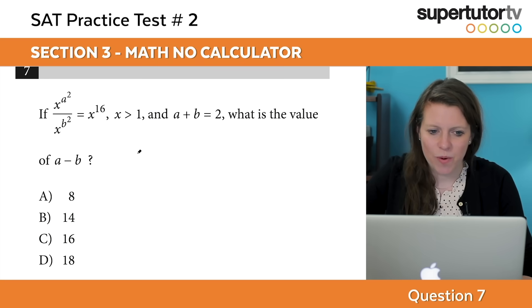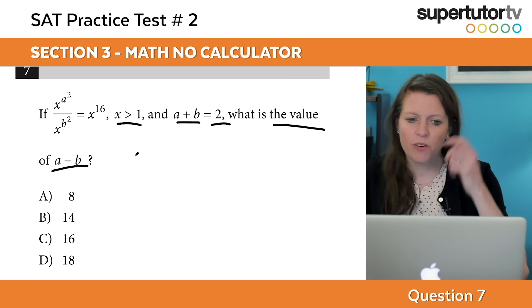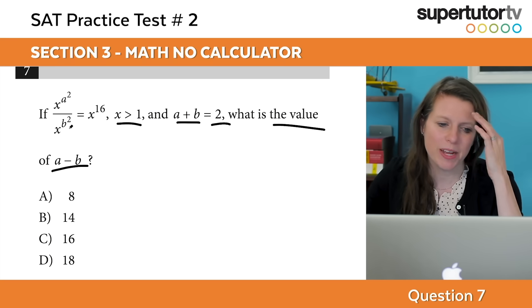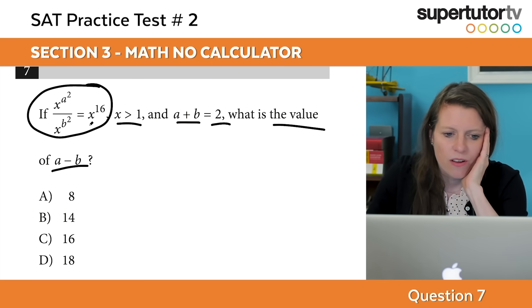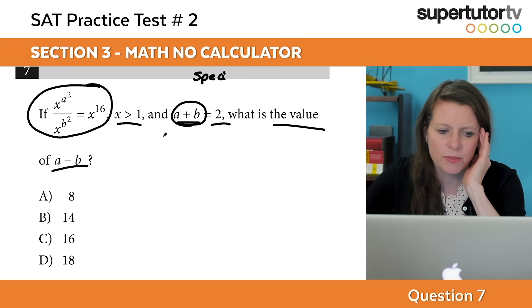We have if x to the a squared over x to the b squared equals x to the 16th, x is greater than 1 and a plus b equals 2, what is the value of a minus b? This sounds overwhelming but your best bet is just to try to simplify this down.